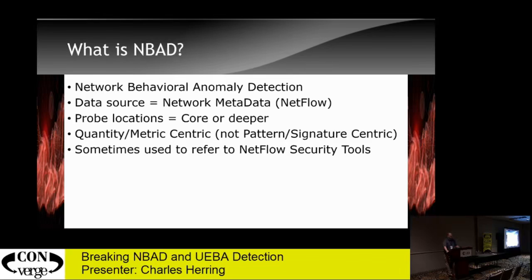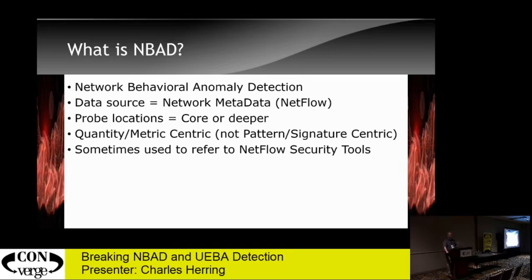Network behavioral anomaly detection came around in 2002 — that was the first time we started talking about it. It generally works off of metadata because it's only building patterns. You only need to know how many bytes are exchanged, so you can do most of that inside of the TCP header space. The advent of NetFlow, IPFix, CFlow, JFlow — all these records that represent communications from route-switch infrastructure — became a really good place for this. It allowed visibility on horizontal or east-west communications inside the network. They are quantity-specific: how many packets, how many bytes. It doesn't really matter what's inside of the packet — it matters how many payloads are occurring.